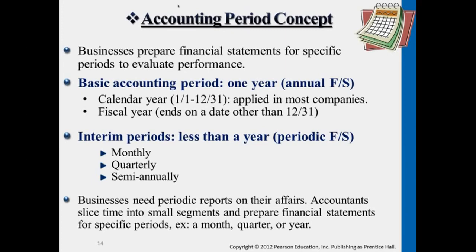Most companies, when they do annual statements, use the calendar year — meaning from January 1st all the way to December 31st. Some retail stores that have busy seasons at the end of the year because of Christmas and New Year's may decide to follow a fiscal year, which means the ending date is still a year period, it's just that the ending date is different from December 31st. So they can start the statement February 1st and end it the following year on January 31st.